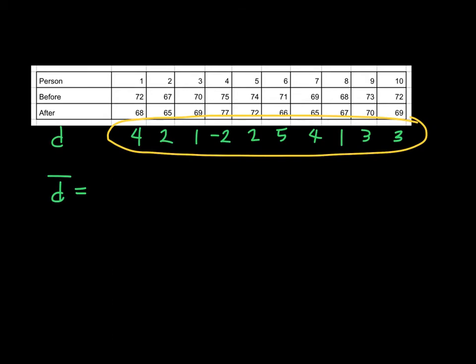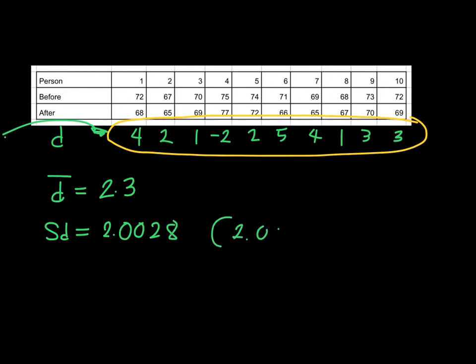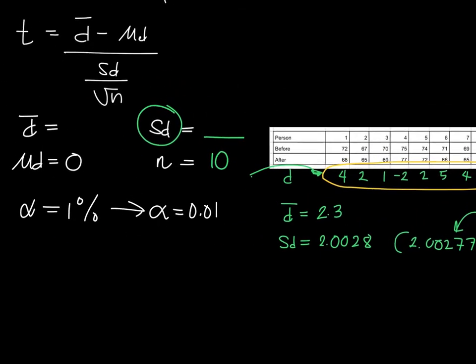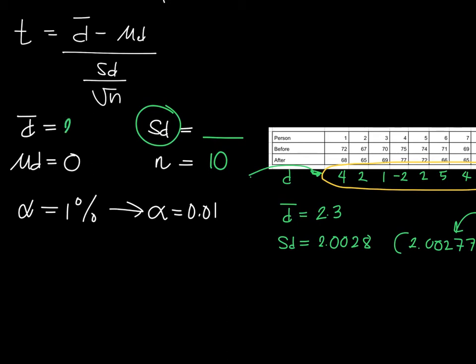Using the calculator, the mean of the differences, d-bar, is 2.3, and the standard deviation sd is 2.0028 (from 2.00277, using four decimal places).